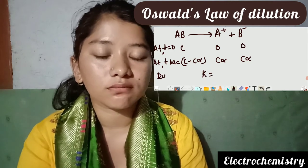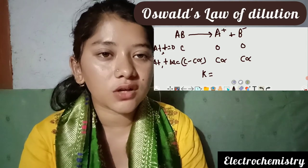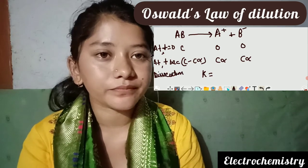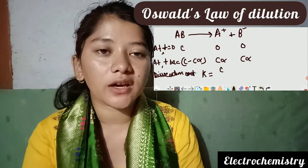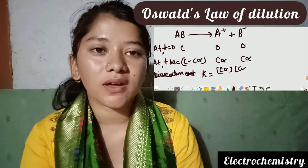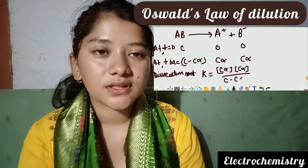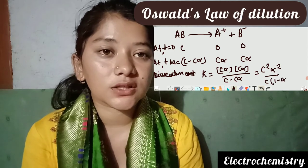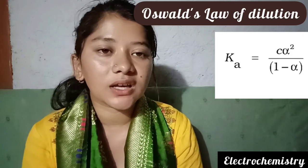Writing the dissociation constant, K is the ratio of the concentration of products to reactants. Substituting the equilibrium concentrations, we get K equals C alpha squared divided by 1 minus alpha. This is the formula we used in the last video, and its origin is Ostwald's Law of Dilution.